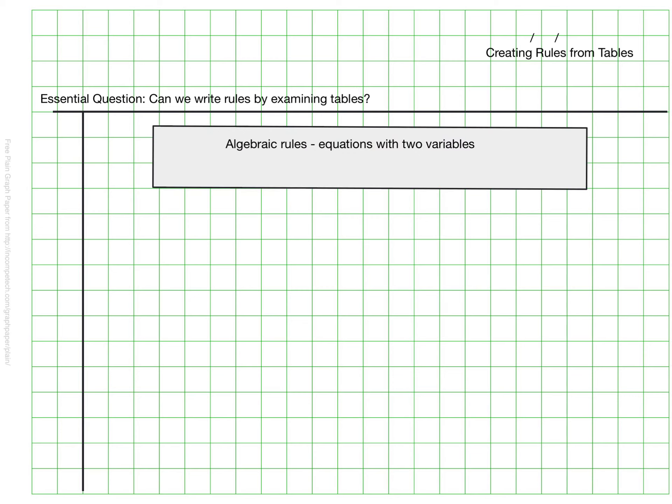And since we are working with rules in this video, a quick reminder that algebraic rules are like equations, but they're equations that have two variables. So you might see something like 2x equals y, and it has a variable x and a variable y.